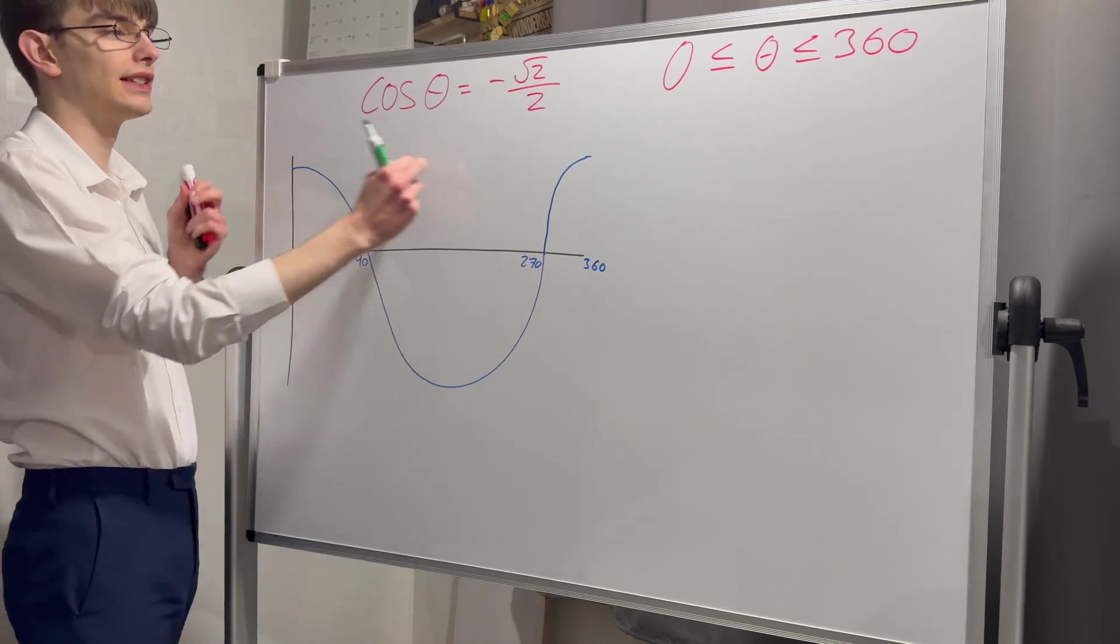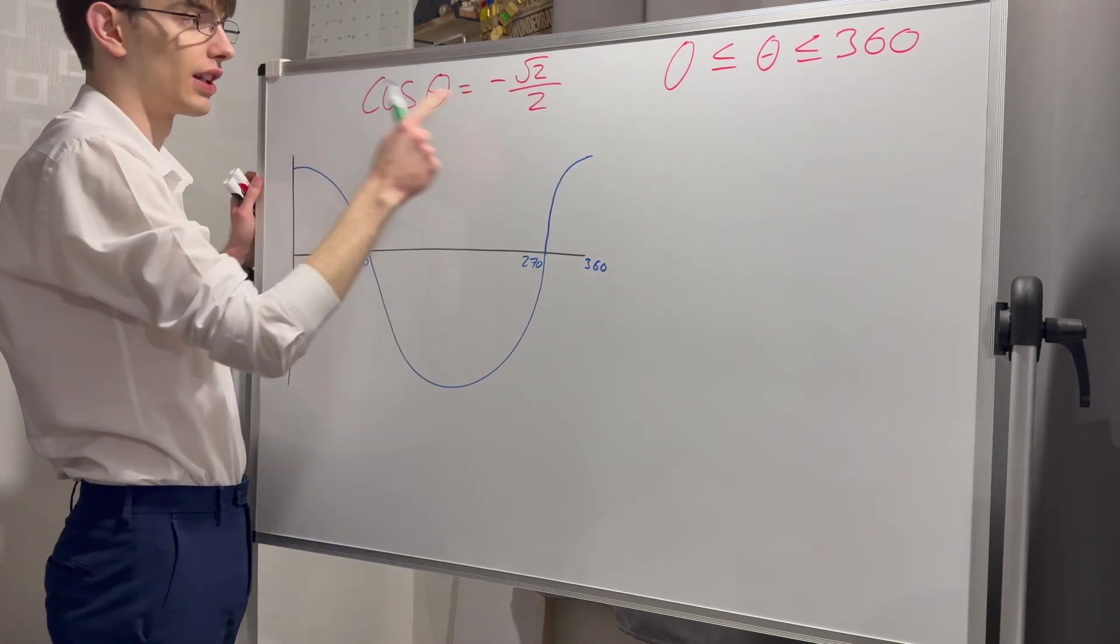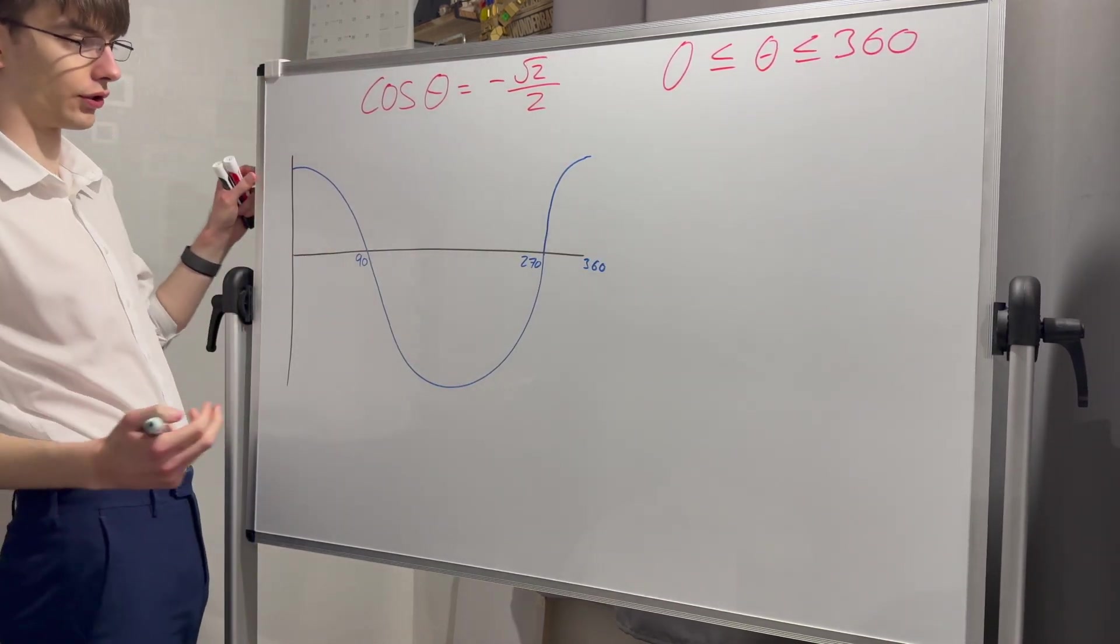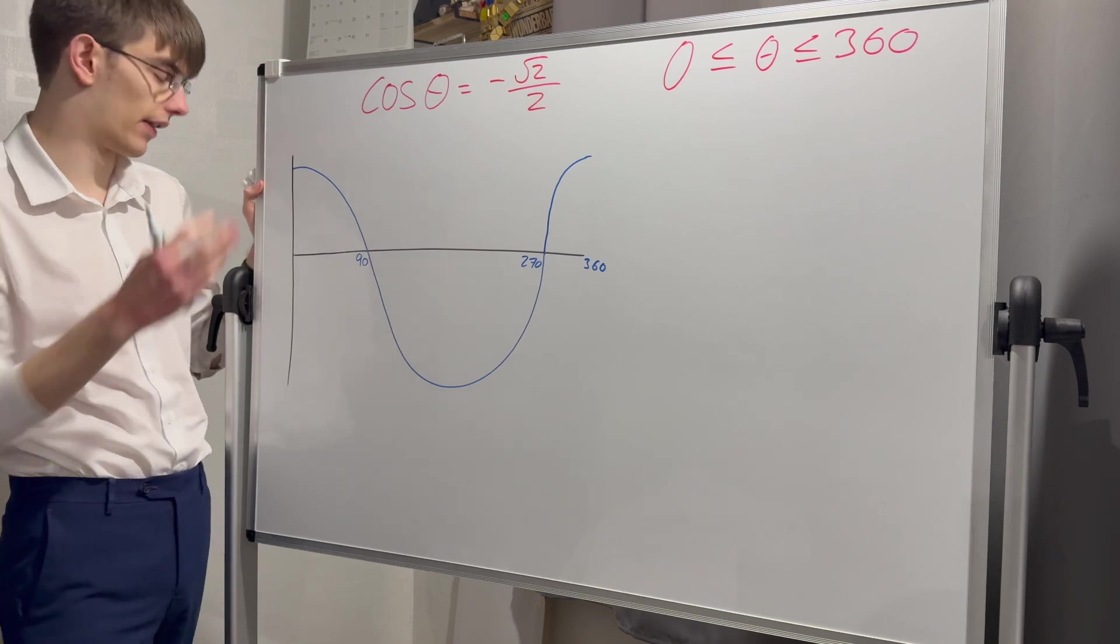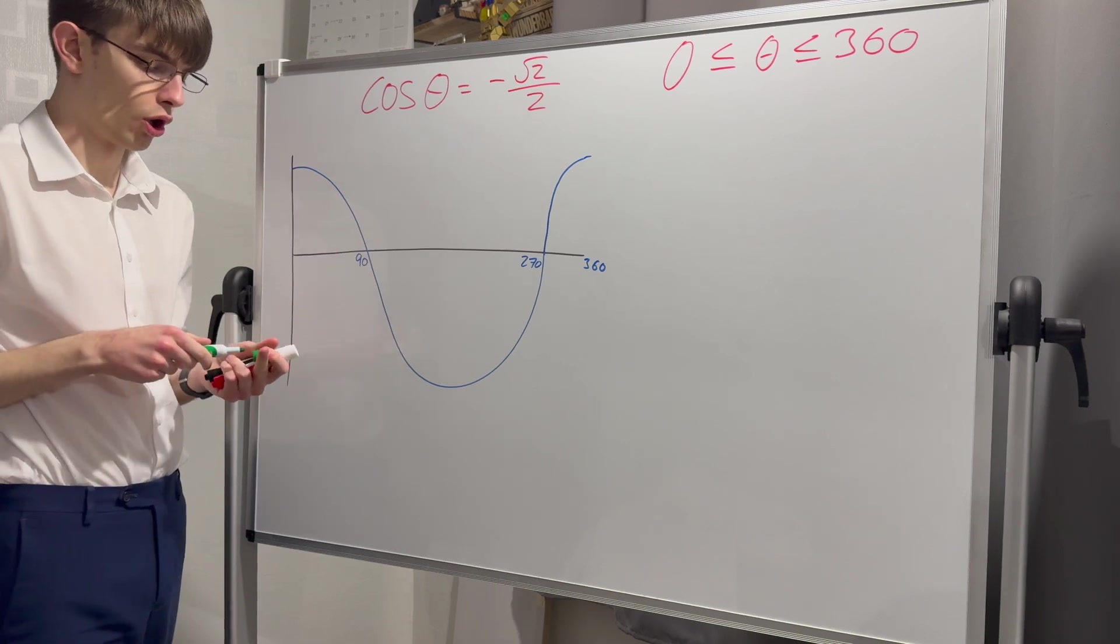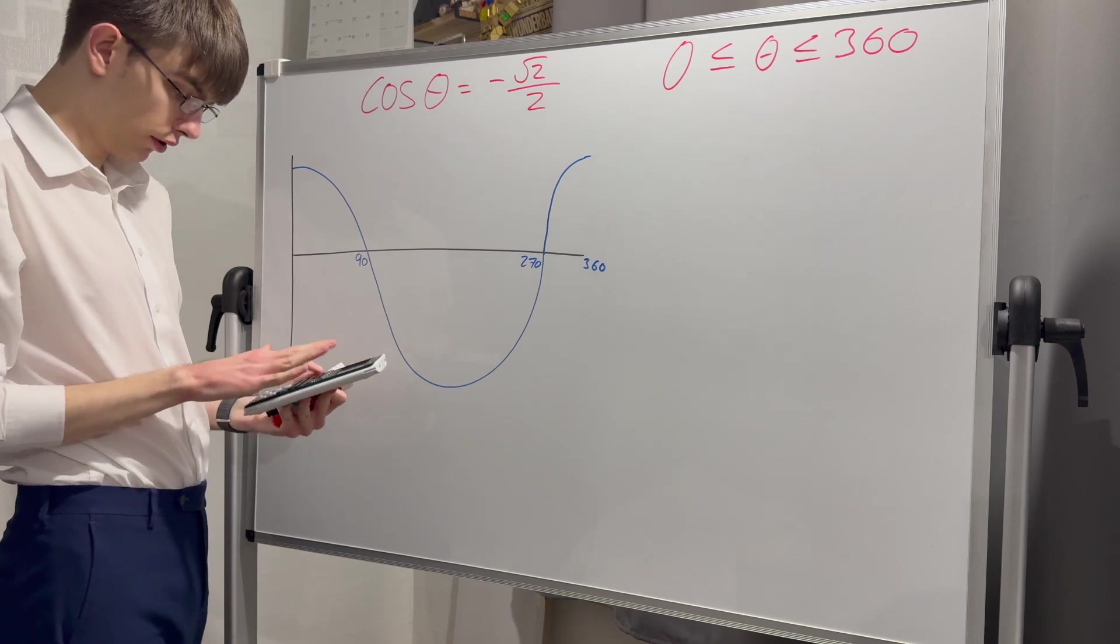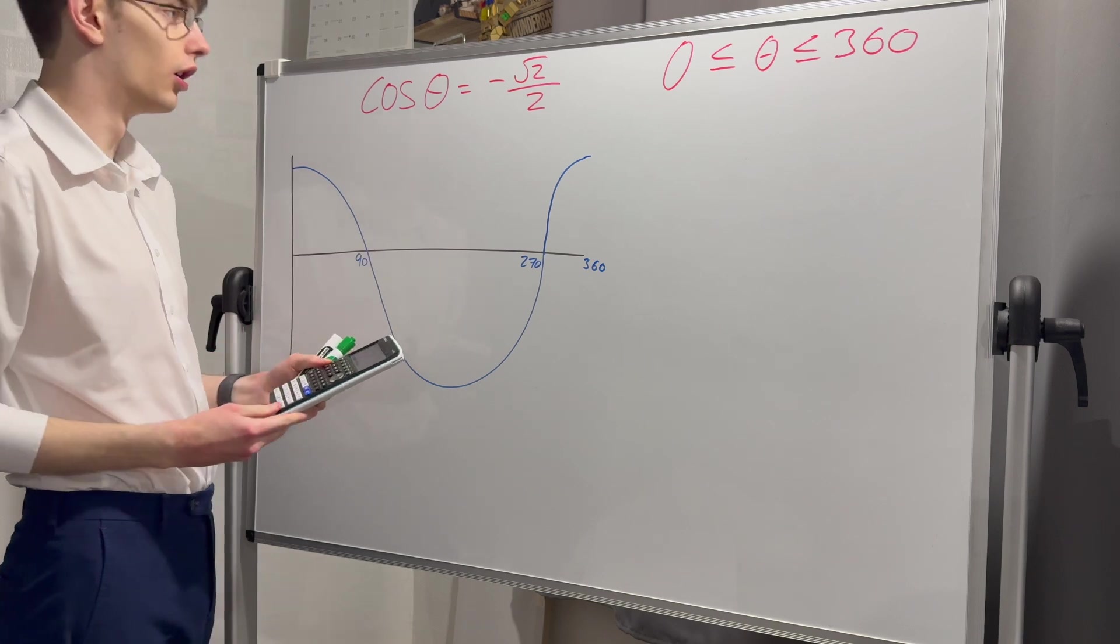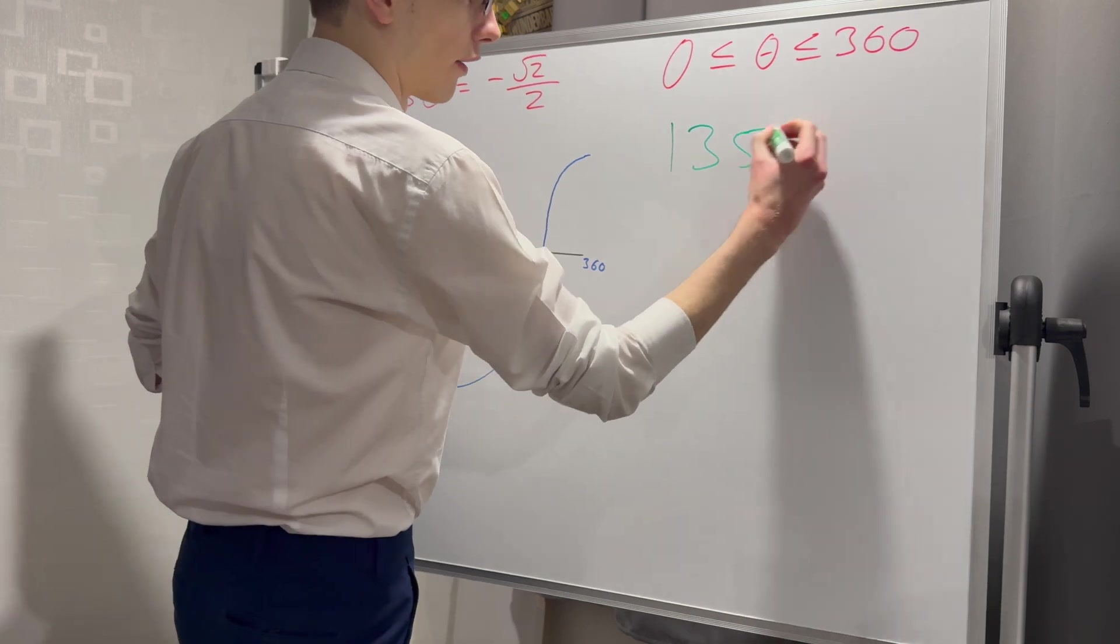Now I've got cosine of theta equals minus root two over two. This time I've got a negative. Still working between zero and 360 degrees. I'm going to use my calculator to find the principal value. Cosine inverse of minus root two over two gives me 135 degrees.